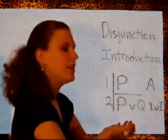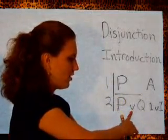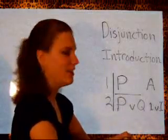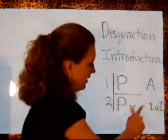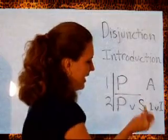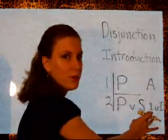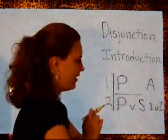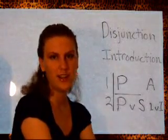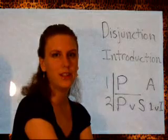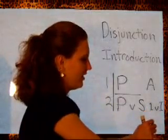That's what the disjunction introduction rule lets us do. If we have just one expression by itself, we can put an OR symbol after it and then anything else we want. So maybe we want P to turn into P or S. All we have to do is put the OR next to it and put in the S that we want, because the whole statement is true given that P is already true. Then we put the line where we got the original piece, the P — we got that on line one — and we write OR and I for introduction.